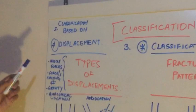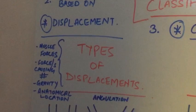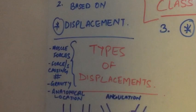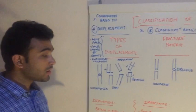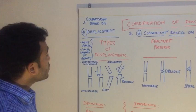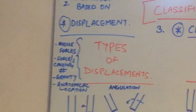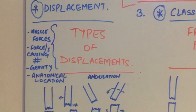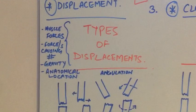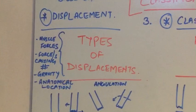The displaced fractures are displaced because of the muscle forces acting on the bone, the forces causing the fracture, gravity, and anatomical location of the fracture. For example, a femur broken into two parts has many muscles attached to its distal part and many muscles attached to its proximal part. So these distally attached muscles will pull the bone to their side while those attached to the proximal part would pull the fragment to their side, hence ultimately displacing the fracture.